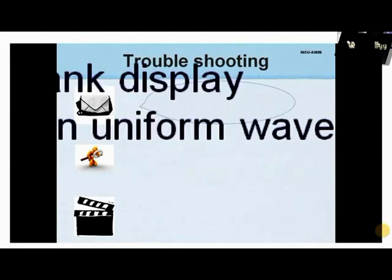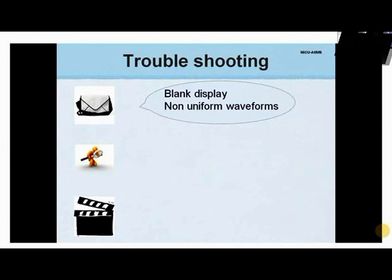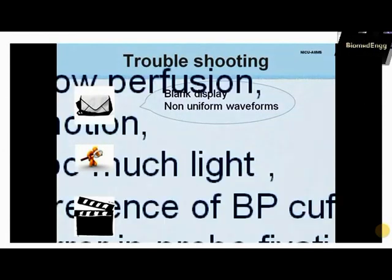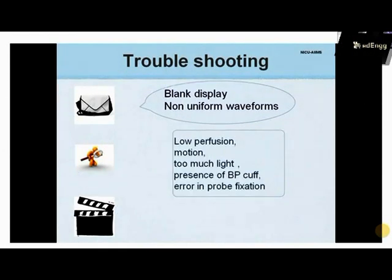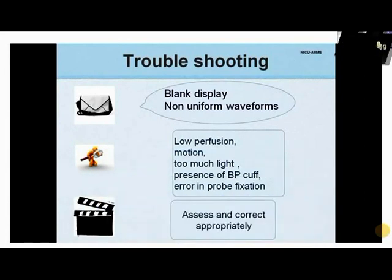In case of a blank display or non-uniform waveforms, the causes could be many: low perfusion, motion, too much light, presence of a BP cuff on the arm, or an error in probe fixation. The actual cause should be actively searched for and corrected accordingly.